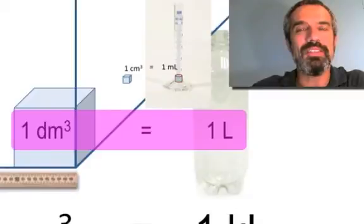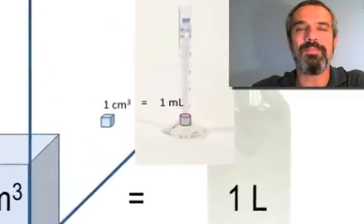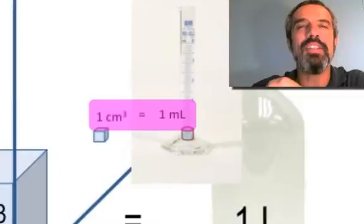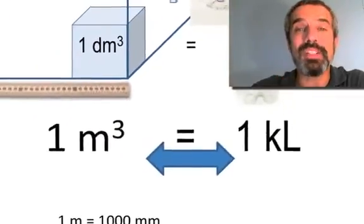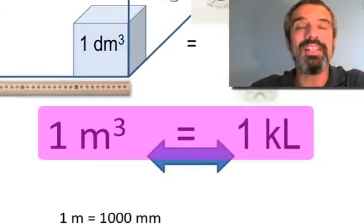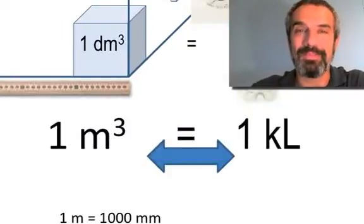In the middle, a cubic decimeter, exactly the same thing as a liter. Go smaller than that, you get a cubic centimeter, the same thing as a milliliter. Go bigger instead, and you get a cubic meter, is the same thing as a kiloliter.